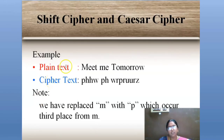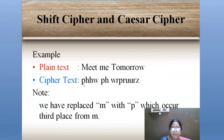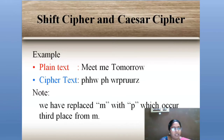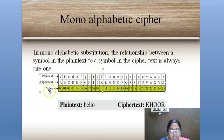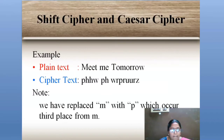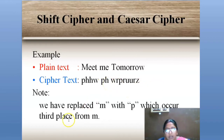Here is an example. The plaintext is 'meet me tomorrow.' From the letter M, moving three letters forward — N, O, P — we get the letter P. From the table, we can verify this. Likewise, E shifted three places gives H. So for 'meet me tomorrow,' the ciphertext is P-H-H-W, P-H, and W-R-P-U-U-U-R-Z.